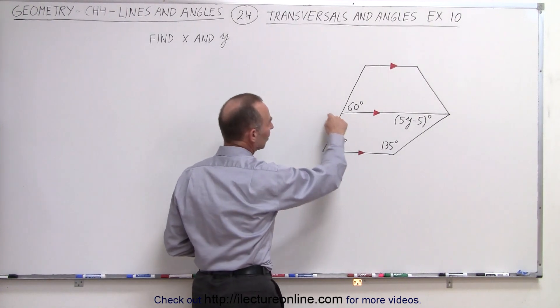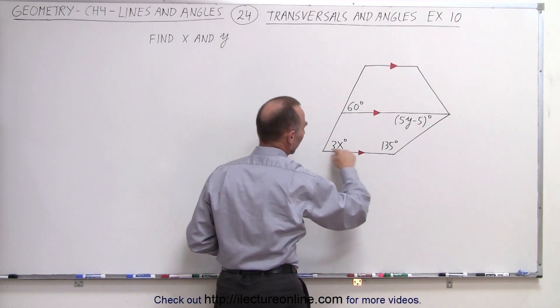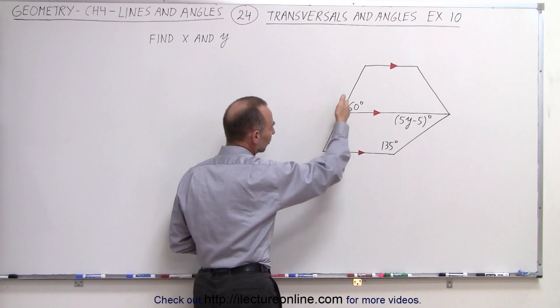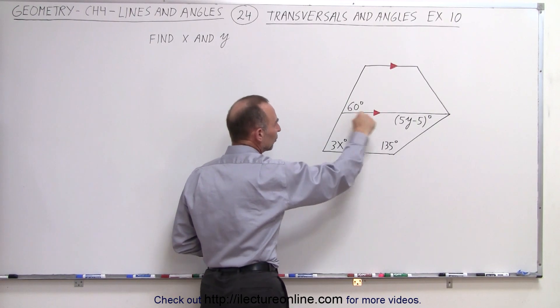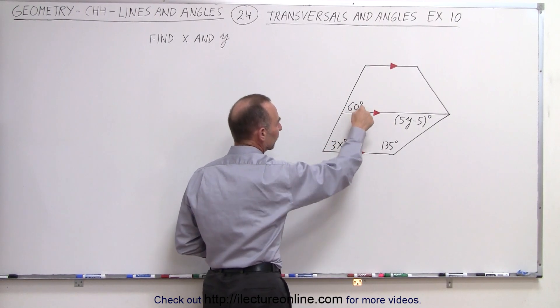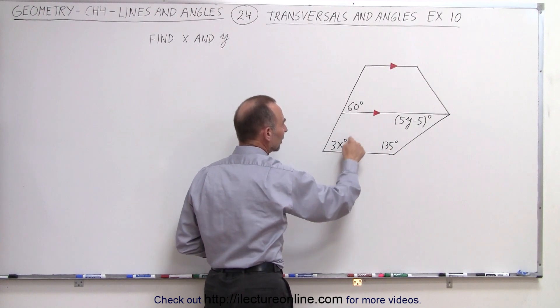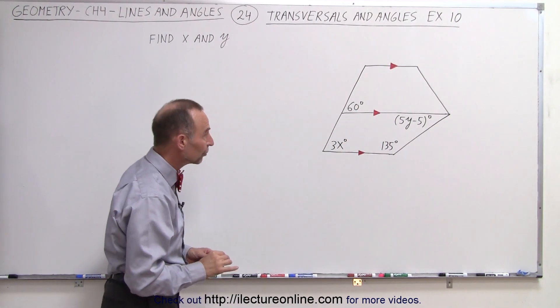So first what I'm going to look at is these two lines right here, these two parallel lines, and then this can be considered the transversal of these two parallel lines. If we look at these two angles, we can say that these therefore must be corresponding angles.